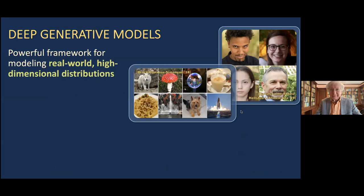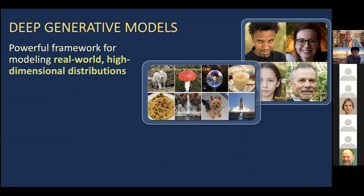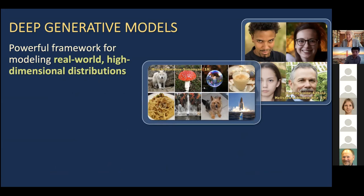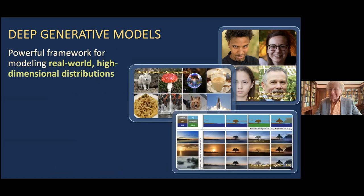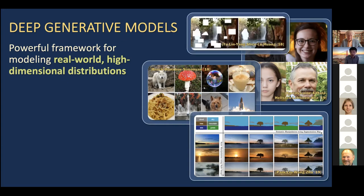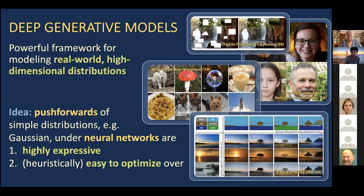Many of you have probably seen images like these — pictures of people and objects that don't actually exist, output by some deep generative model trained to sample from the distribution over real-world images. What's great about these models is that not only are they capable of generating hyper-realistic and diverse images, but they also serve as an important building block for downstream applications like semantic image synthesis, inpainting, and much more. While these models are wildly successful in practice, we know very little about why this is the case, or how to quantify what they're actually accomplishing.